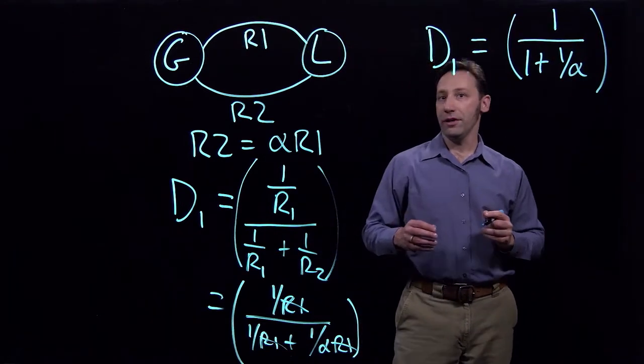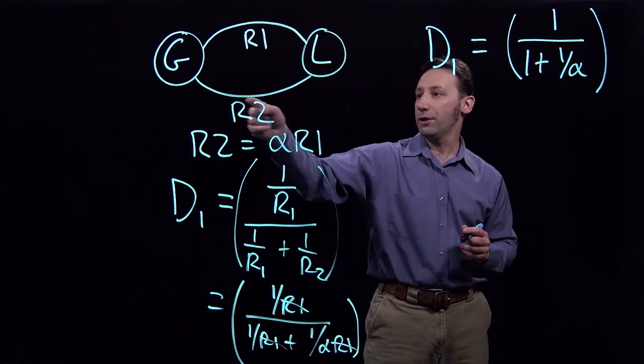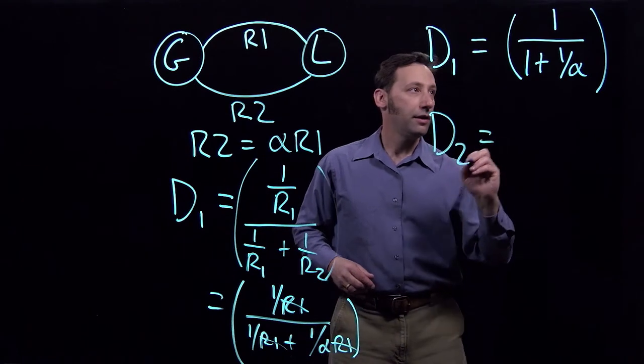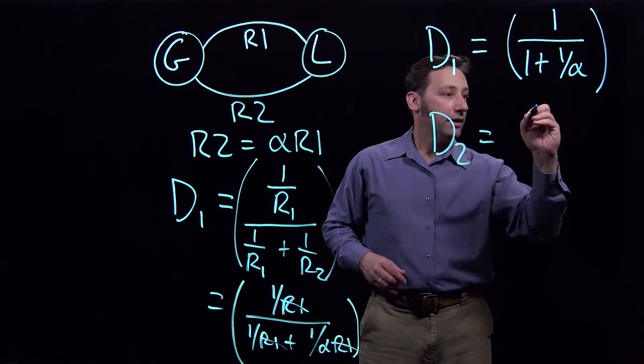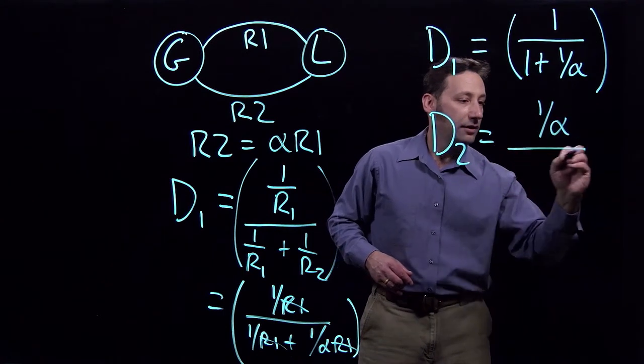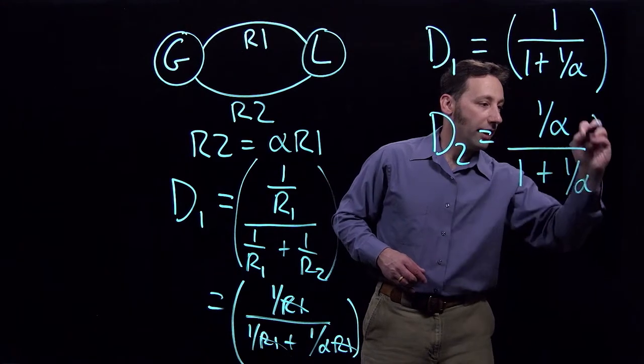And we can go through the same thing for D2, which is the proportion of the power that flows over this line. And what we're going to get is that D2 is going to be equal to 1 over alpha divided by 1 plus 1 over alpha.